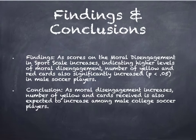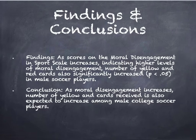Since we had a significant relationship, it was positive, and the number was 0.897, so it was quite strong. In the findings, which you would put in the results section, you would say: as scores on the moral disengagement in sports scale increases, indicating higher levels of moral disengagement, the number of yellow and red cards also significantly increased — p is less than 0.05 — in male soccer players. The conclusion, which you would report in the discussion section, would say: as moral disengagement increases, number of yellow and red cards received is also expected to increase among male college soccer players.